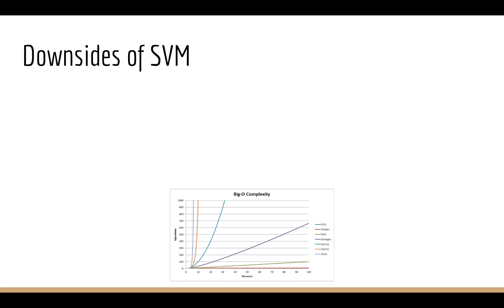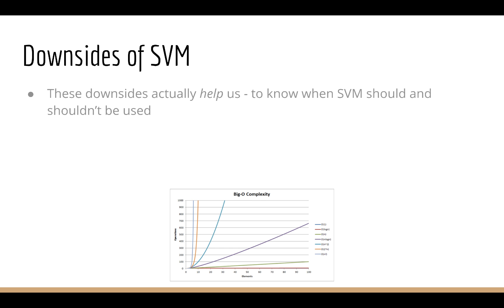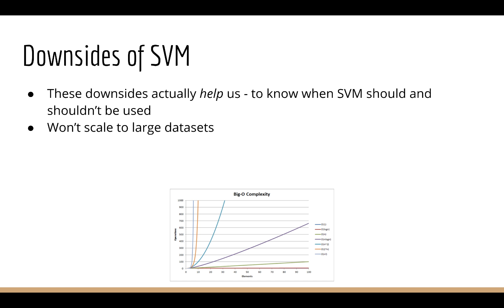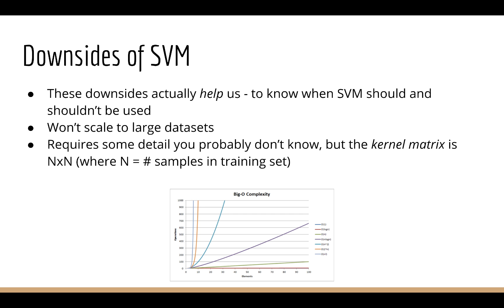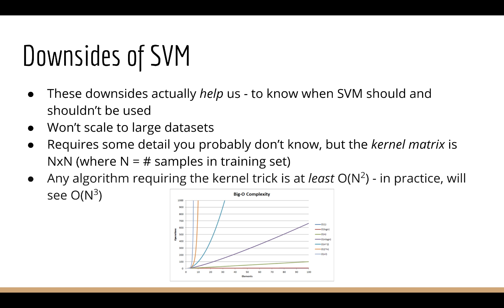Of course, there are some downsides to the SVM as well — and these help us understand when the SVM should and should not be used. The first and most glaring disadvantage is that SVMs won't scale to large datasets. Training a kernel machine such as the SVM requires you to calculate a kernel matrix, which is an n-by-n matrix where n is the number of samples in your dataset. That means any algorithm which requires the kernel trick is at least O(n²), and can be O(n³) or even worse.